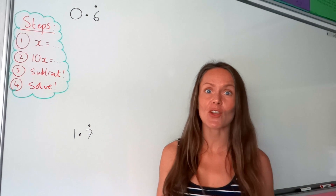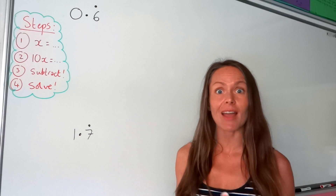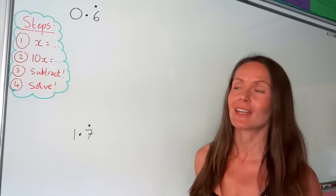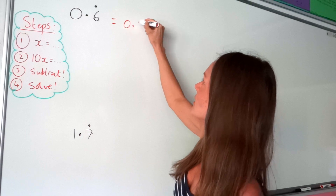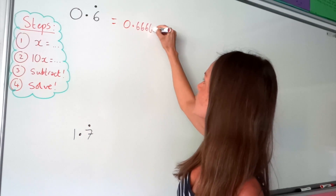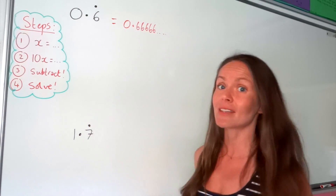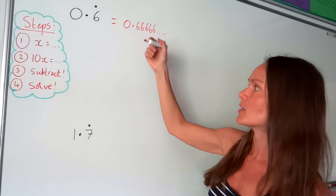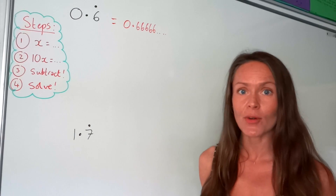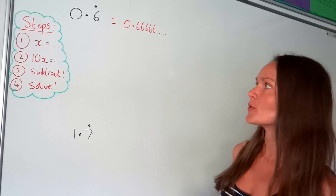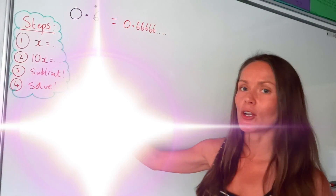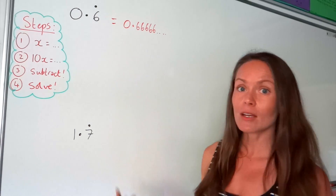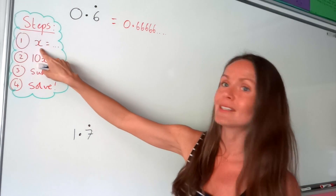In this video I'm going to show you how to write recurring decimals as fractions without a calculator. Remember what recurring is — 0.6 recurring is just the same as 0.666 with those sixes never ending. Our job is to try and get rid of these decimals and rewrite it as a fraction. I've got some steps I'm going to follow. I'm going to write my recurring decimal, 0.6 recurring, equal to the letter x.